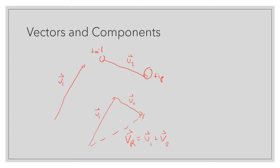When subtracting vectors, we just reverse the direction of the second vector. So if we have V1 minus V2, we flip V2 and add it tip to tail, giving us the resultant vector.